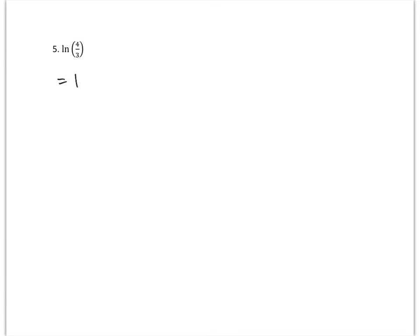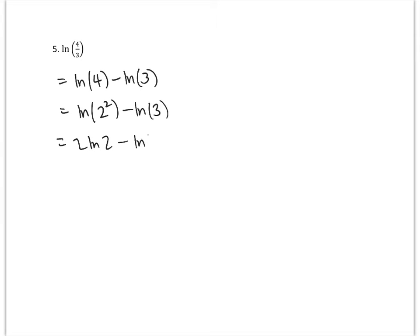This time we've got the natural log of a fraction — natural log of 4/3. The rule here is that the natural log of a fraction is the difference between the natural log of the top minus the natural log of the bottom. We can write 4 as 2 squared, bring that power down, and write this as 2 times the natural log of 2 minus the natural log of 3. So that's 2a minus b.